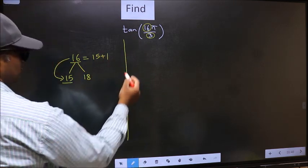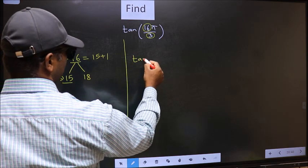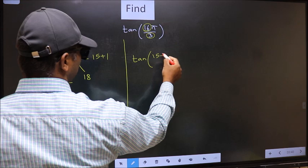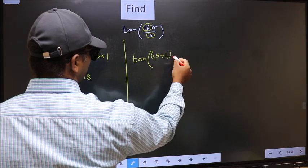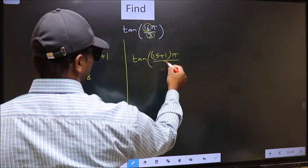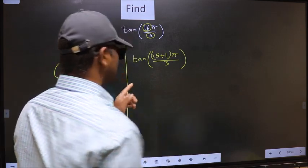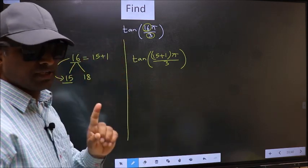So, this will become tan. In place of 16, now we should write 15 plus 1 pi by 3. This is your step 1.